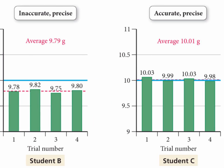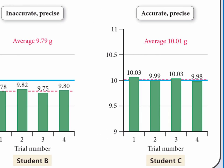Student C made both accurate and precise measurements. The measurements are accurate because the average is very close to the actual mass. And the measurements are precise because the measurements are very close to one another.